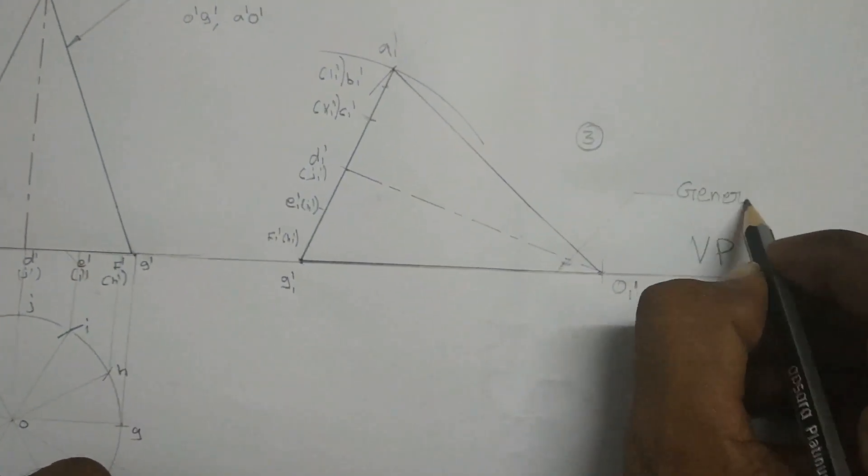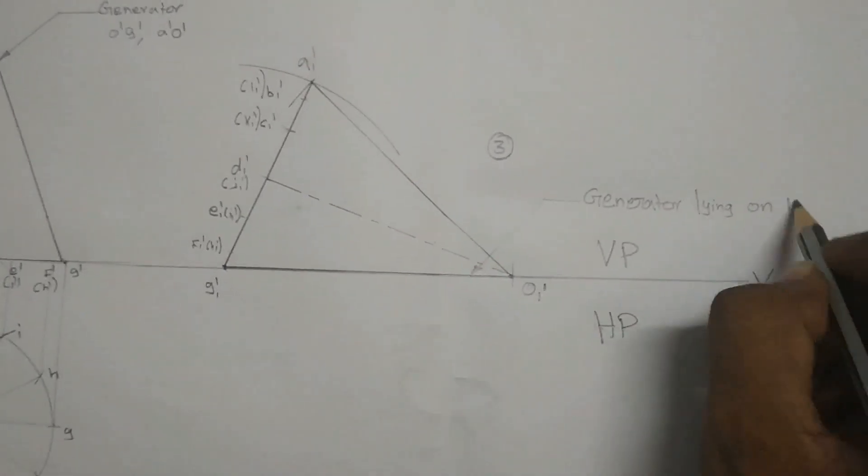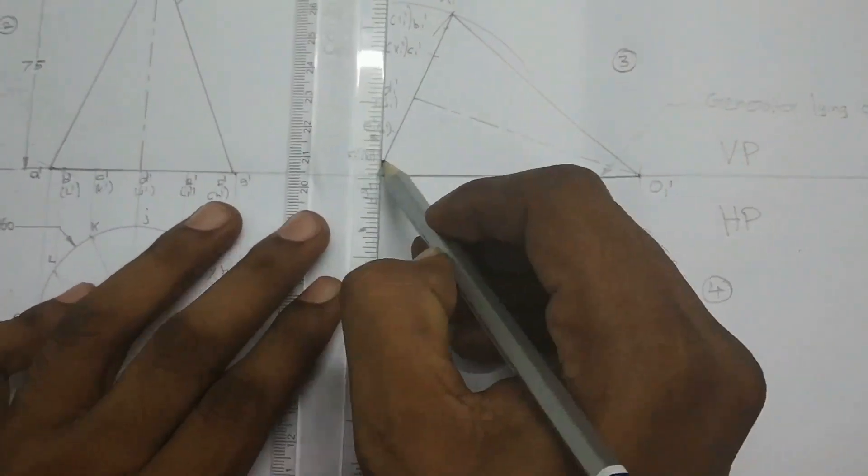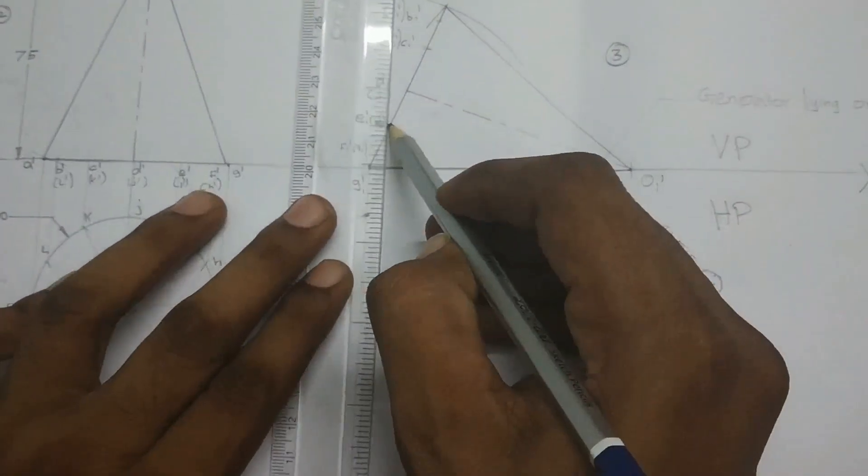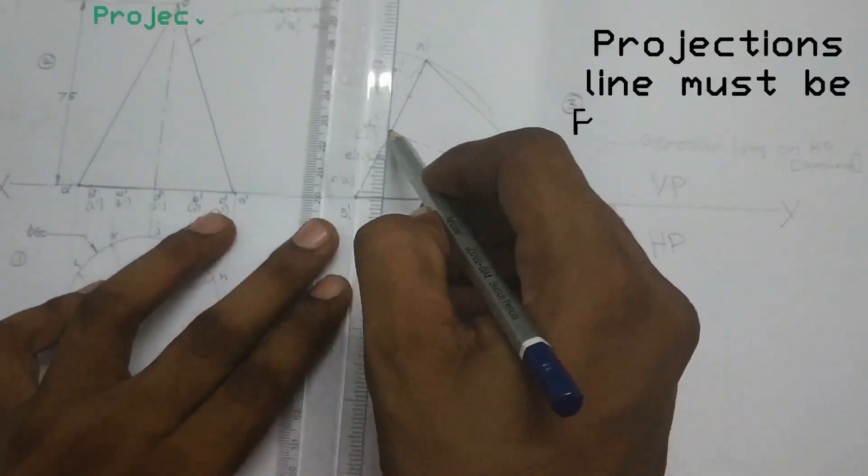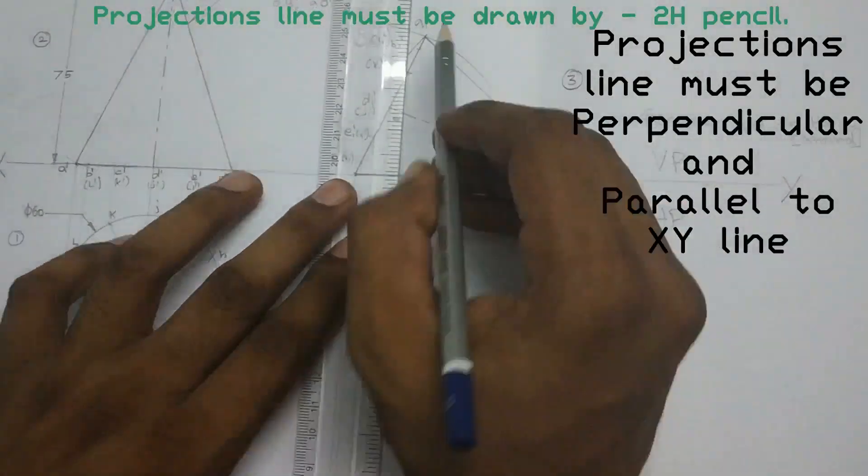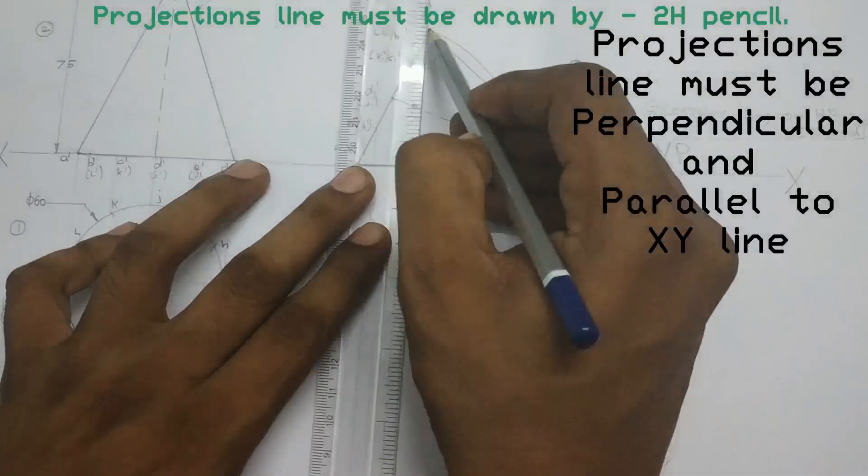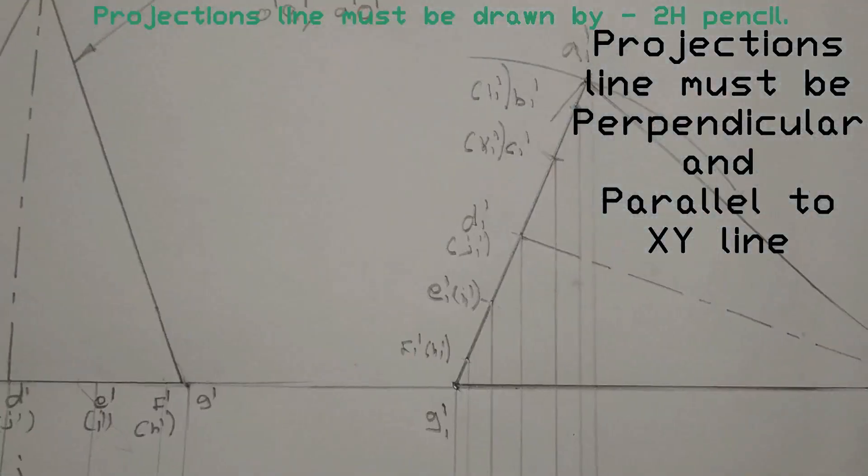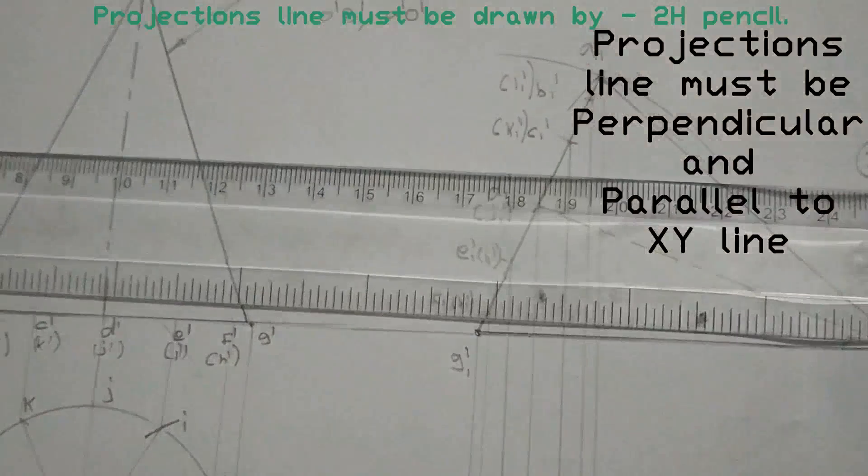Now we have to draw the projections line from step 3 to step 4. The projections lines must be parallel to each other. We have to use 2H pencil for the projections line.